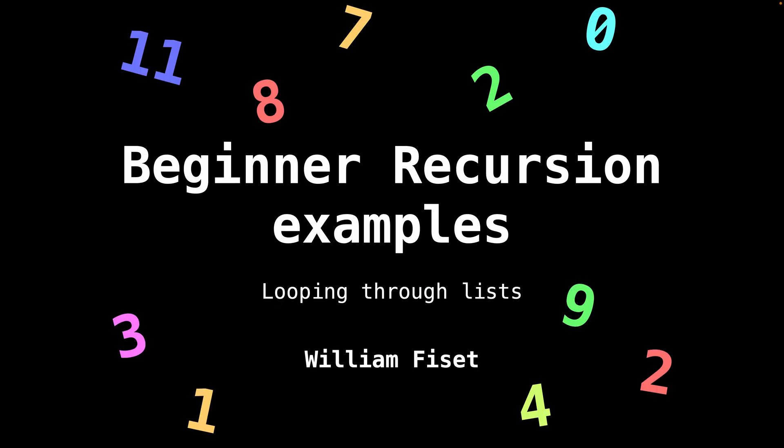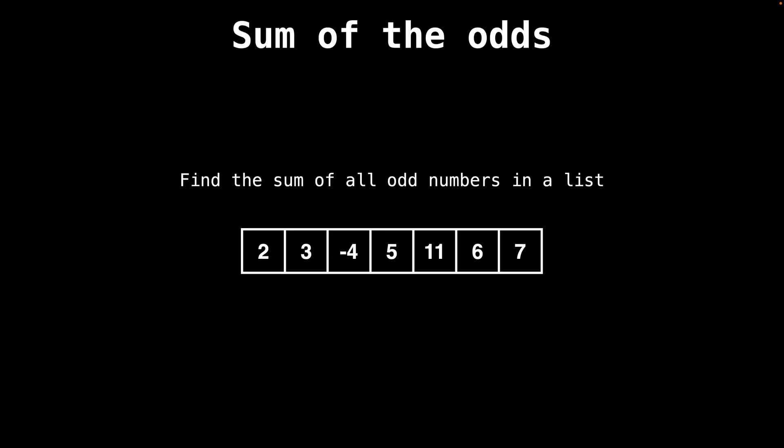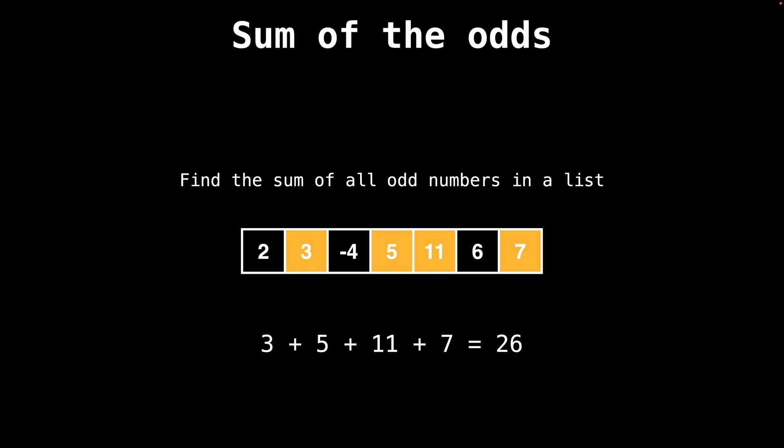Hey everyone, welcome back. This is William and today we're going to look at how to iterate through lists using recursion. Looping through elements in a list is a very common operation we do in programming, and it's something we want to know how to do recursively as well. To get a sense of how to iterate through lists using recursion, we're going to be looking at a simple problem: finding the sum of all the odd numbers in a list.